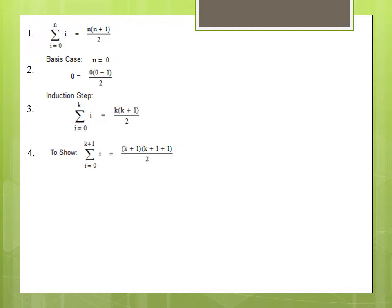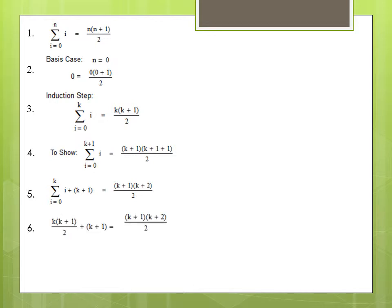We now need to find a way to substitute in our inductive hypothesis. We can rewrite the summation from i equals zero to k plus one of i as the summation from i equals zero to k of i, plus k plus one. Then we substitute our inductive hypothesis. We get k times k plus one over two plus k plus one, equal to k plus one times k plus two over two.